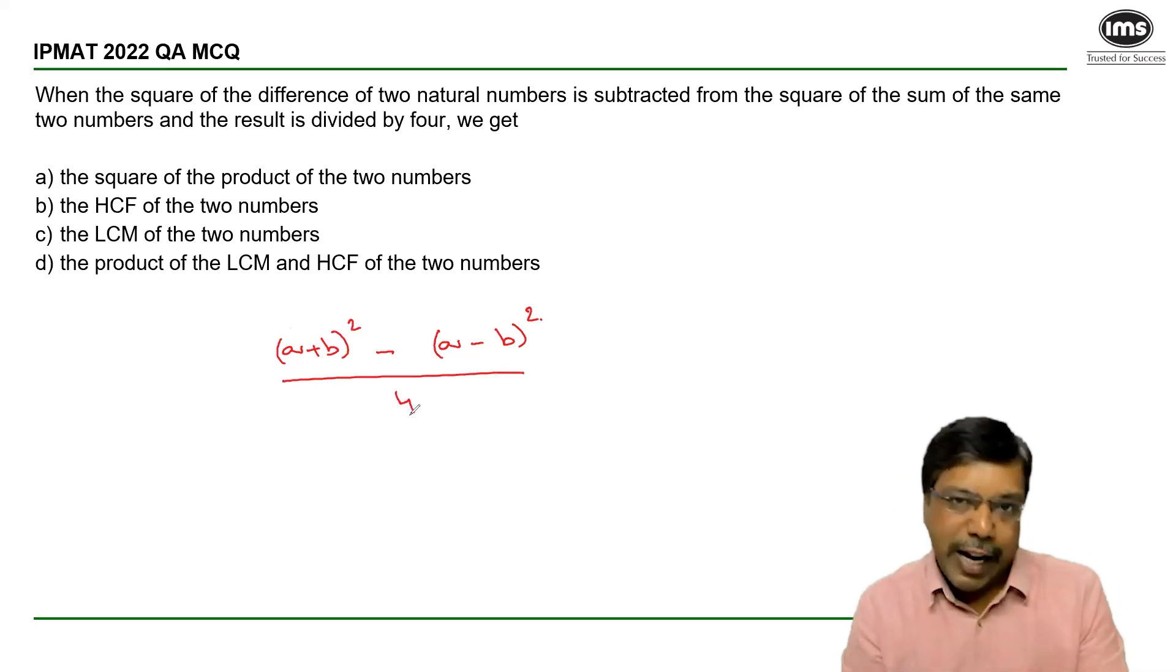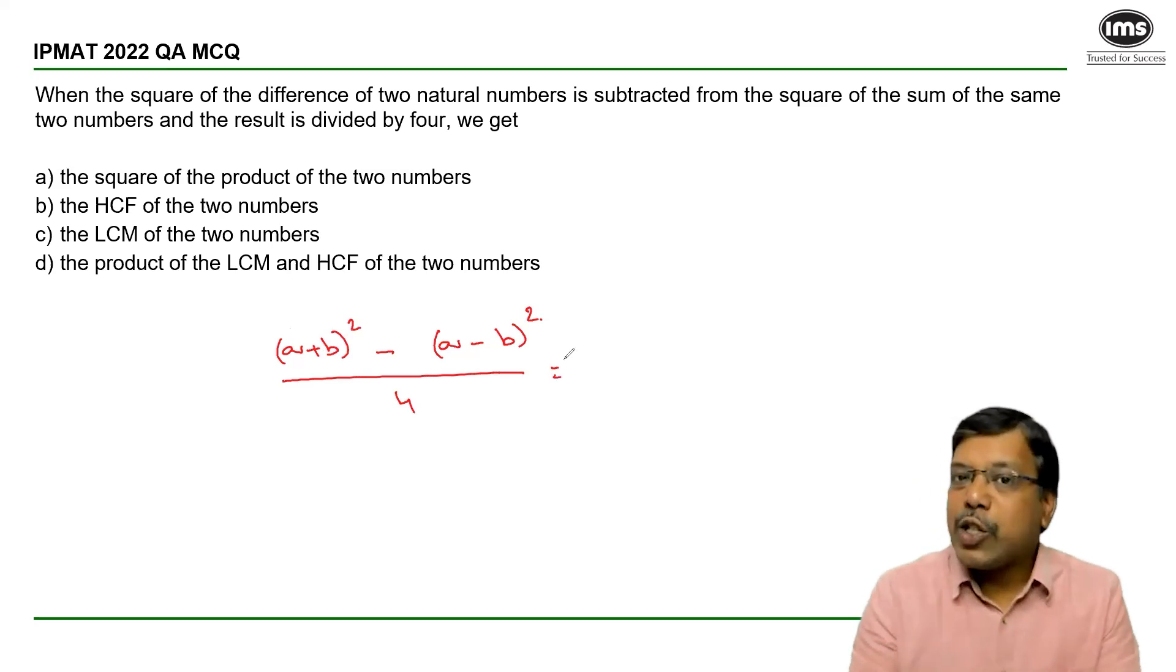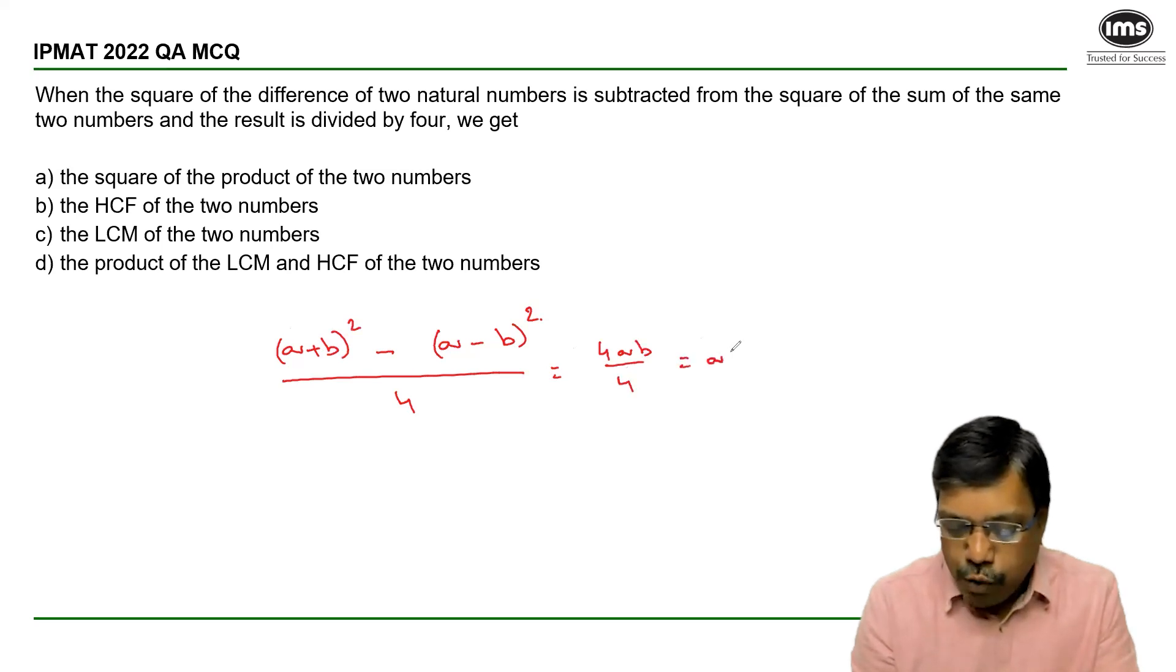So what do I do? We know that (a+b)² minus (a-b)² is 4ab. By 4, which is equal to ab.